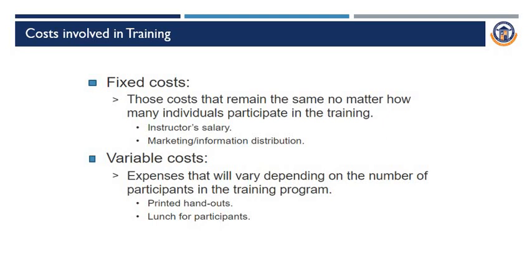A training budget should include: initial communication about the training program; training delivery such as classes, video tutorials, e-learning, or course fees; training materials like workbooks and videos; instructor fees; traveling, lodging, or meal expenses required to participate; ongoing training costs; and contingencies for unforeseen costs.